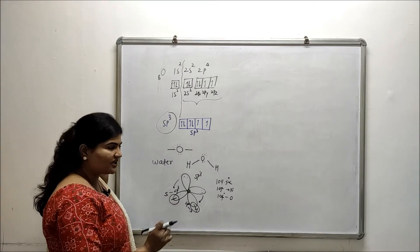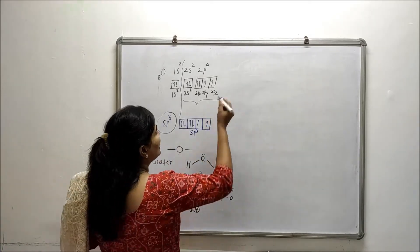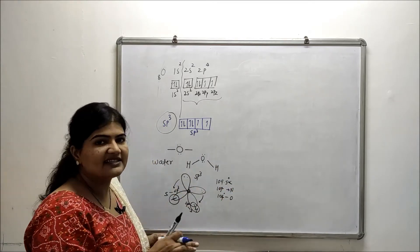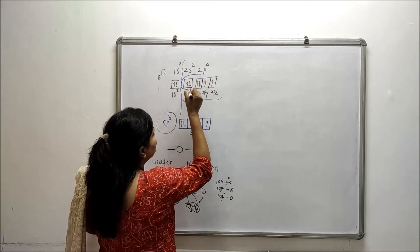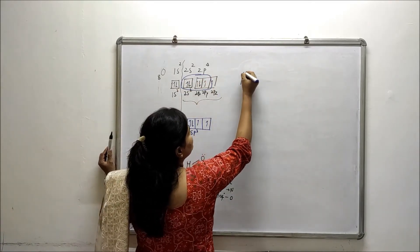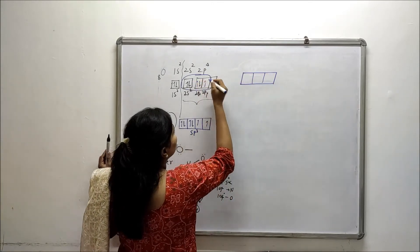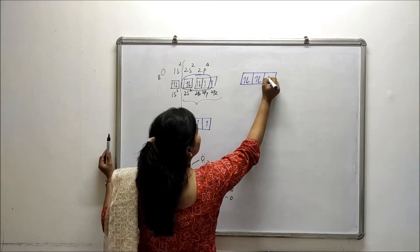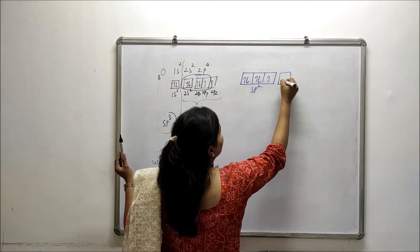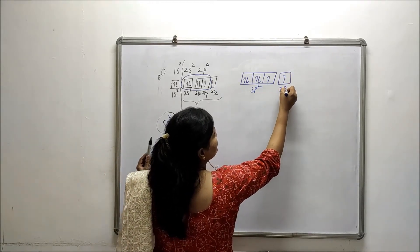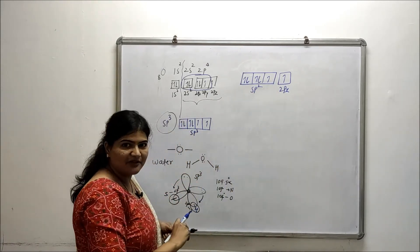Now let's discuss sp2 hybridization. As the name suggests, one 2s and two 2p orbitals are involved, forming three sp2 hybrid orbitals. The 2pz orbital is left unhybridized. So in sp2 hybridization there are three hybrid orbitals, and 2pz remains as the unhybridized orbital.